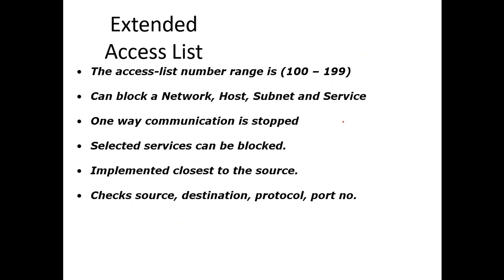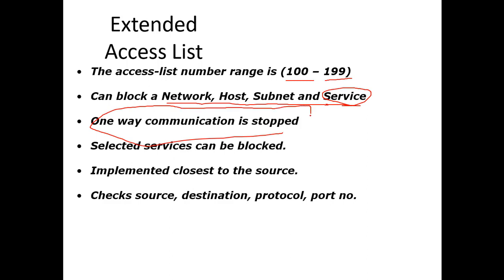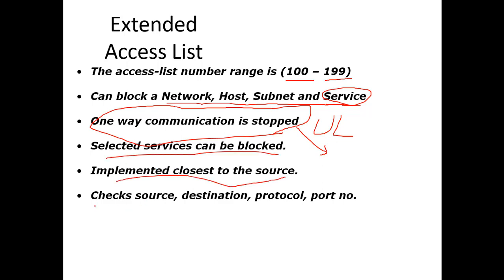The second type is the extended access list, which ranges from 100 to 199. It is an advanced version — instead of just filtering by network, host, and subnet, it also allows you to manage service types. It provides one-way communication, is implemented closest to the source, and can block selected services. It checks source address, destination address, protocol, and port number.